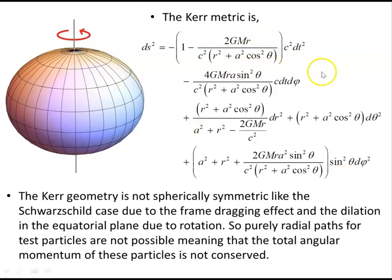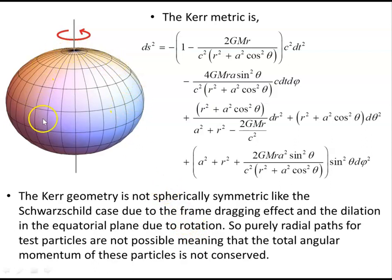Our rotating source mass creates a spacetime around it. The Kerr metric — technically the line element ds² — describes this spacetime interval. The Kerr geometry is not spherically symmetric like the Schwarzschild case, due to the frame-dragging effect and the dilation in the equatorial plane due to rotation. In the Schwarzschild case we had a spherical shape; this one is oblate spheroidal because of the rotation, bulging in the direction of the equatorial plane and dilating away from the rotation axis.